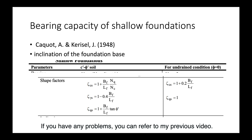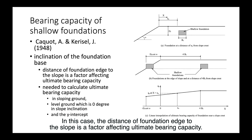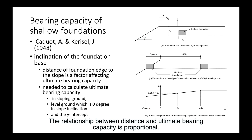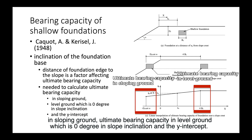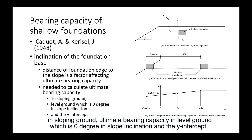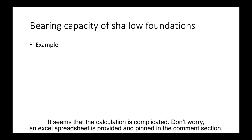In this case, the distance of the foundation edge to the slope is a factor affecting ultimate bearing capacity. The relationship between distance and ultimate bearing capacity is proportional. It is needed to calculate the ultimate bearing capacity in sloping ground, the ultimate bearing capacity in level ground — which is zero degrees slope inclination — and the y-intercept. By interpolation, the value of ultimate bearing capacity can be obtained.